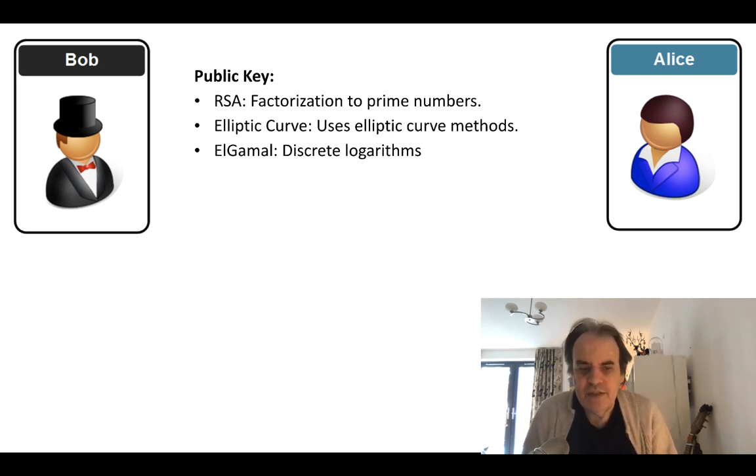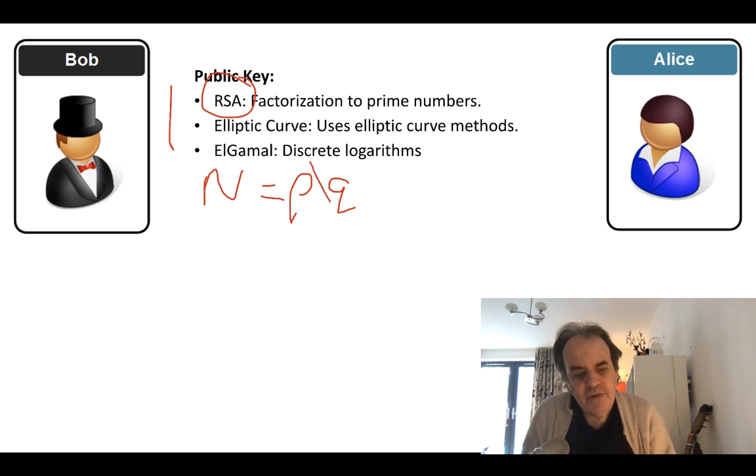The three main ways that we typically use public key encryption are with RSA. With RSA, we create a modulus which is two prime numbers multiplied together. The difficulty of this is to be able to factorize N back into the prime numbers P and Q.